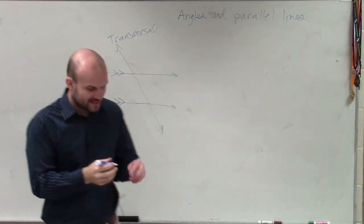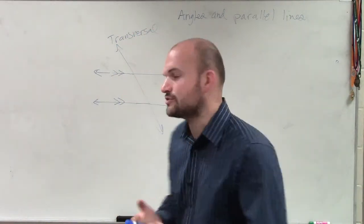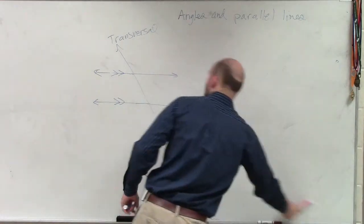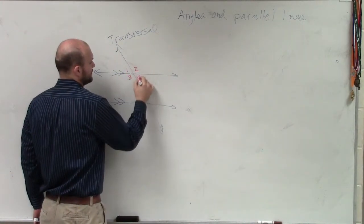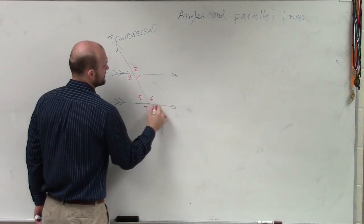Okay, so when we did this, what was nice about having lines and a transversal was it created angles. One, two, three, four, five, six, seven, eight, right?